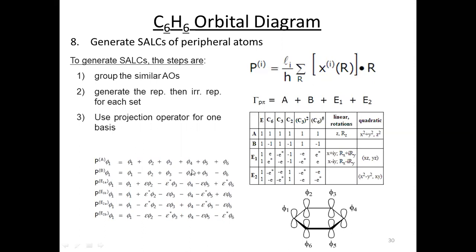So if I apply the projection operator as I have done for the A and B representations, now applying a similar projection operator on E1 and E2, you can see I have marked them as E1A and E1B. For the E1 representation, we have two sub-representations: A and B. In the same way for E2, again we have two representations: E2A and E2B. Applying the projection operator gives us the symmetry-adapted combinations, which we assign according to their orbital symmetry symbols.